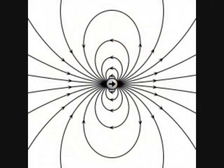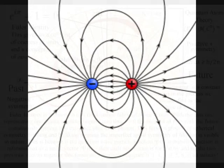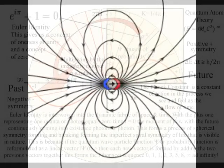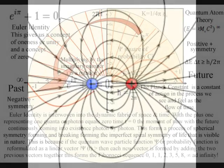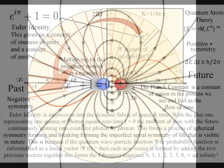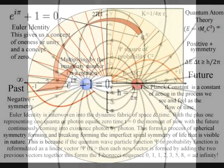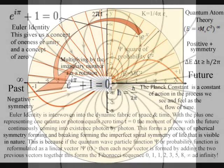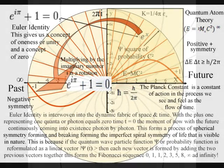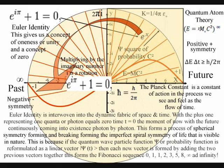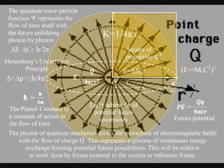Therefore, we even have the start of the Fibonacci sequence in the diagram. This is linked to Euler's identity, giving this beautiful equation a place in the structure of space and time. To explain how the probabilistic nature of quantum mechanics can represent the potential possibilities and opportunities of everyday life...